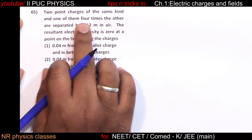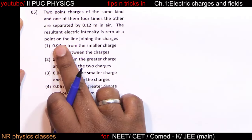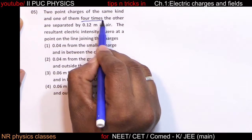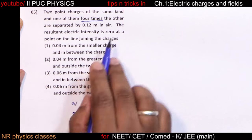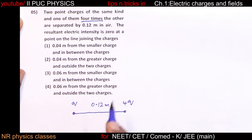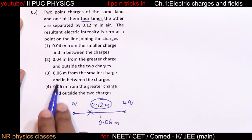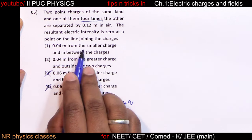Two point charges of the same kind, one being 4 times the other, are separated by 0.12 meter in air. The resultant electric intensity is zero at a point on the line joining the charges. The point is always towards the smaller charge. Half of 0.12 is 0.06, so we need a distance less than 0.06 — that is 0.04 meter from the smaller charge.